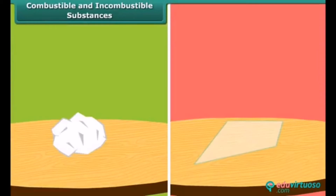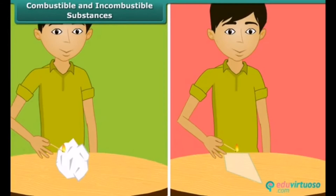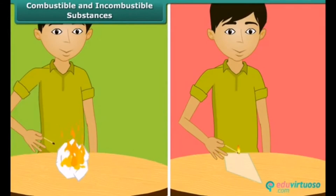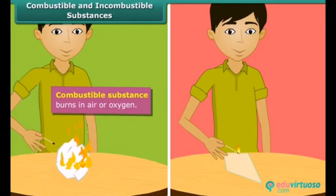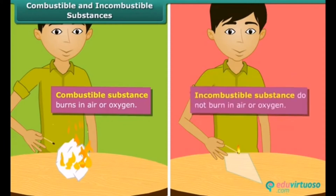There are two types of substances. Some substances catch fire and burn, while the other group does not catch fire. A boy is bringing a lighted matchstick close to paper and glass. Paper catches fire and so it is called a combustible substance. Glass does not burn; substances which cannot burn in air or oxygen are called incombustible substances.